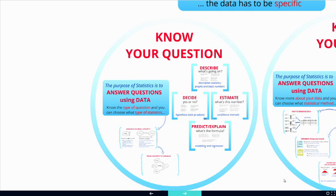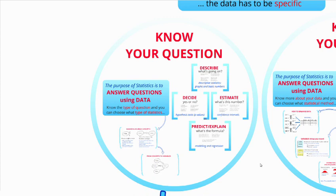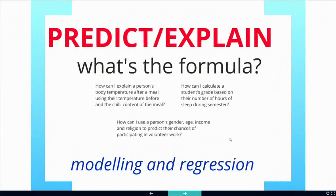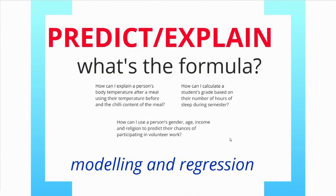So far we talked about in the very first lecture the types of statistics procedures that there are. There were four main areas: descriptive statistics, which answers questions of what's going on; hypothesis tests, which answer yes or no questions; confidence intervals, which answer questions of what's this number. We've talked about all of those already, and there's one to go — the regression — whose aim is to predict or explain, asking the question what's the formula. Statisticians call this process regression, and also modeling.